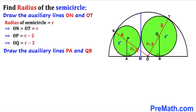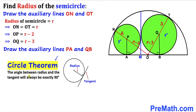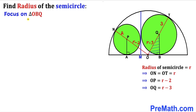Next, we connect center P with point of tangency A, and likewise connect center Q with point of tangency B. Recall the circle theorem: the angle between the radius and the tangent will always be 90 degrees. So this angle at A is 90 degrees and this angle at B is 90 degrees as well. Now let's focus on right triangle OBQ.